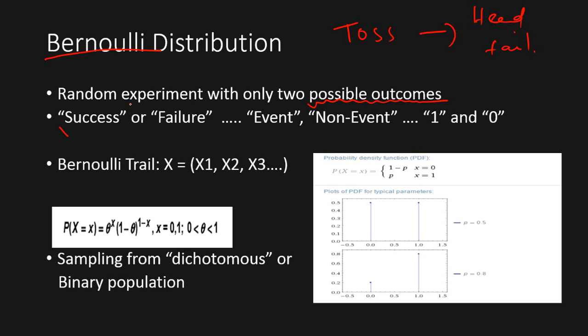We could have success or failure, or event or non-event, which is of interest to most data scientists and analytics people, or ones and zeros in a numerical form. All the time we will have two outcomes.